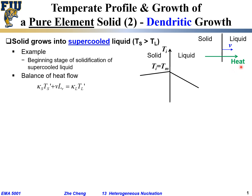That amount of heat extraction must be balanced by the heat flow through the solid — κ_s times T'_s (thermal conductivity of solid times temperature gradient within the solid) — plus the latent heat released when liquid turns into solid. This heat, instead of conducting into the solid, conducts into the liquid phase and is extracted away. This is the complete heat balance equation under this situation.